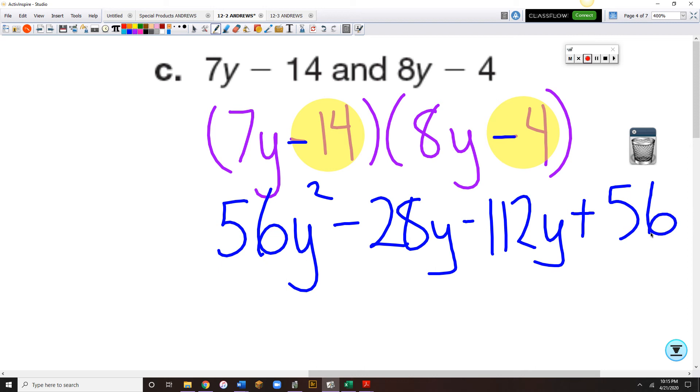So we've got 56y squared, I've got a minus 28y and a minus 112y, so we're subtracting two different amounts, so that means I'm subtracting 140y, and plus 56.